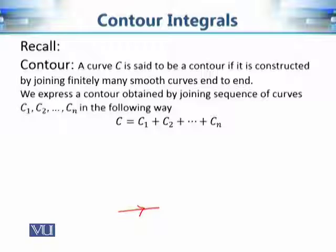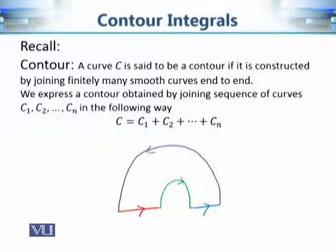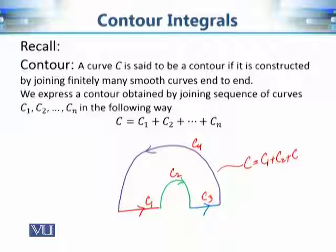We defined what contours are. A contour is basically a kind of piecewise smooth curve — it is composed of many smooth curves joined such that the tail of one curve is joined with the head of another. For example, this contour C is basically C1 plus C2 plus C3 plus C4.